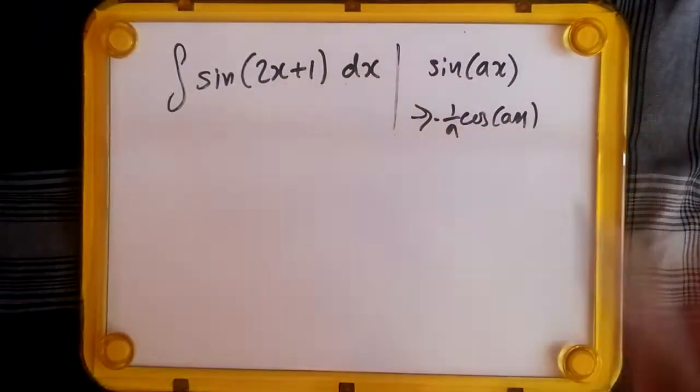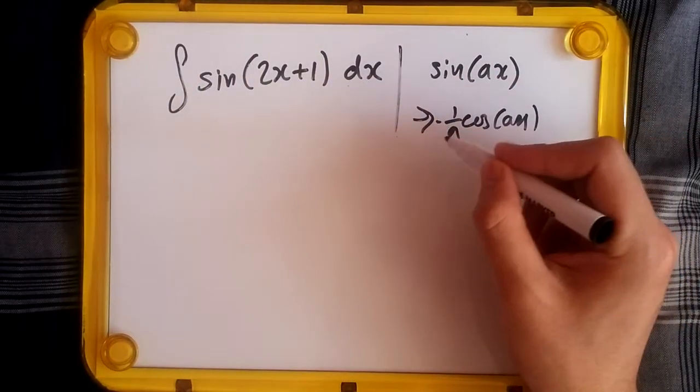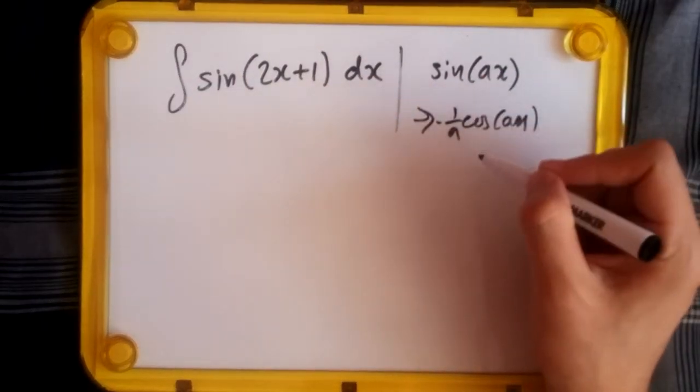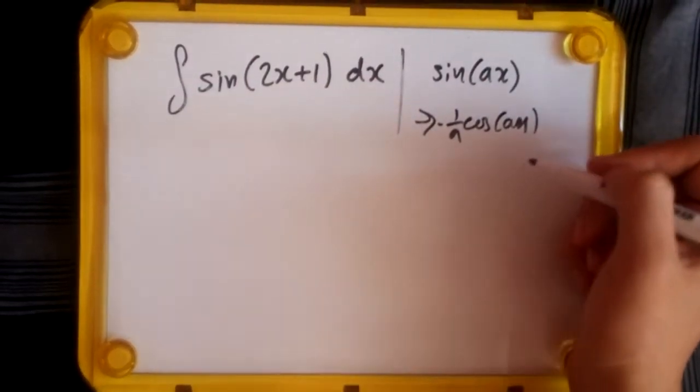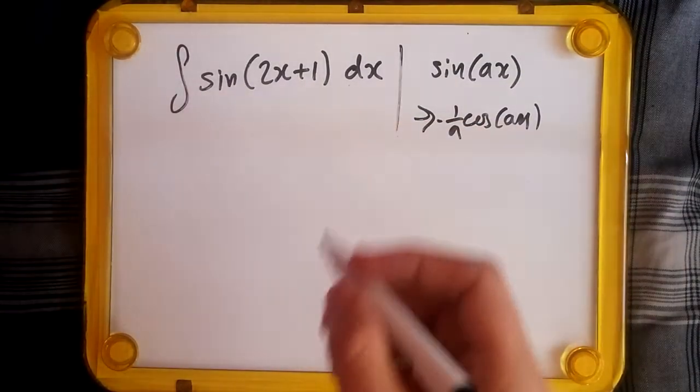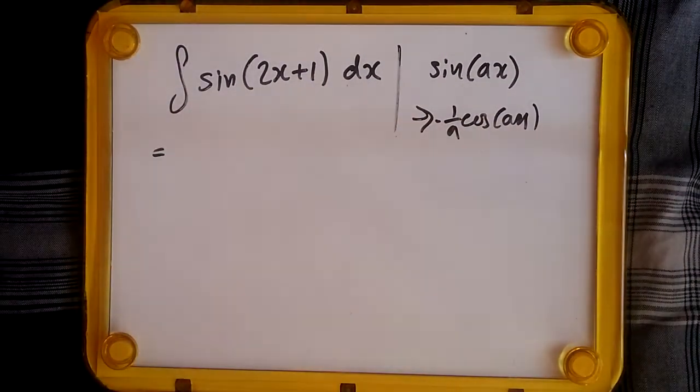So literally that's really it. The idea is it becomes cos, becomes a negative, and whatever is inside goes underneath. It's just standard rules. So that means integrating this one, what do we get?